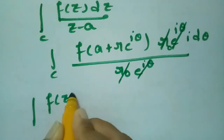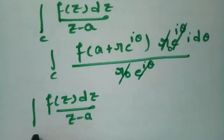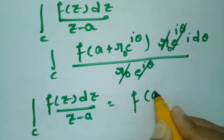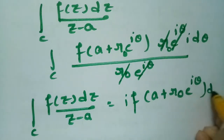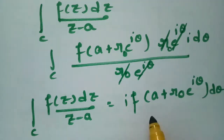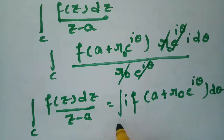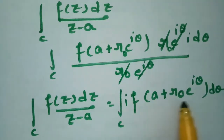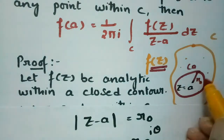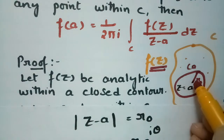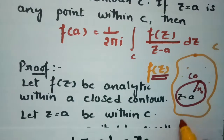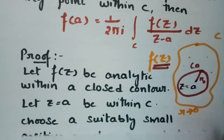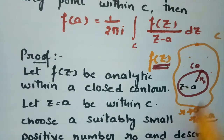After cancellation, the integral of f of z dz by z minus a equals the integral over c of f of a plus r naught times e to the power i theta times i times d theta. Now, r naught is a very very small value. As r naught tends to 0, the circle c naught shrinks — it comes nearer to the center point a. So as r naught tends to 0, r naught will converge to the point a.